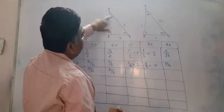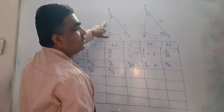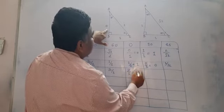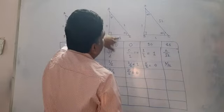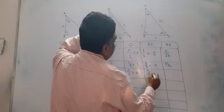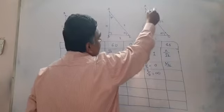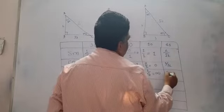Now for tan 0 — opposite side upon adjacent side gives 0 upon 1, which becomes 0. For tan 90, opposite side upon adjacent side gives 1 upon 0, which becomes infinite — it is undefined. For tan 45, opposite side upon adjacent side gives 1 upon 1, which becomes 1.